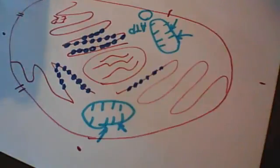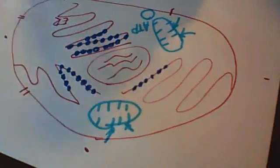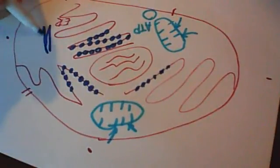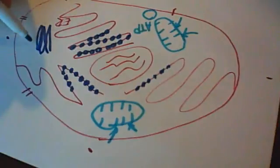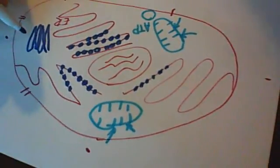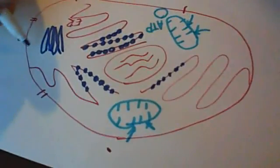Another interesting organelle is Golgi apparatus. It looks like a stack of pancakes. And what I want you to think about it, I want you to think about it as a post office.